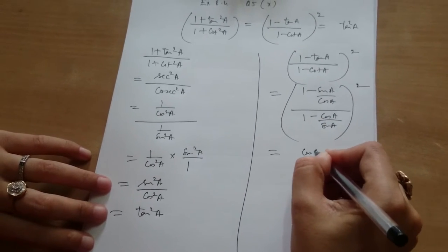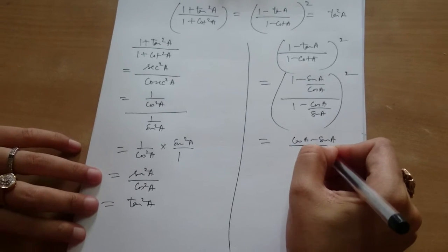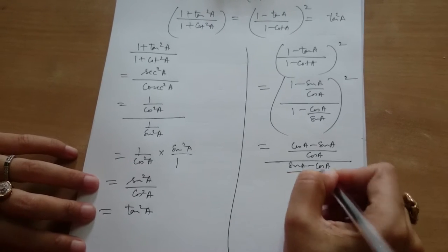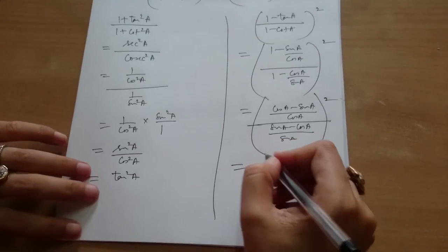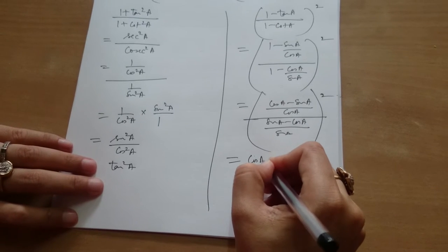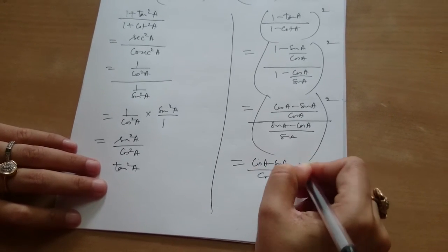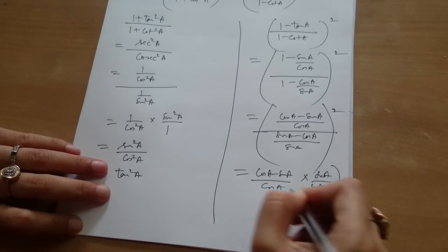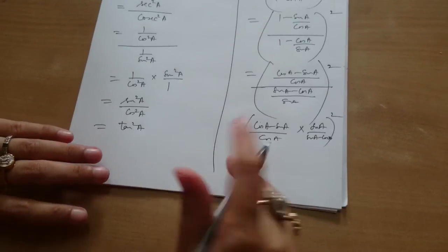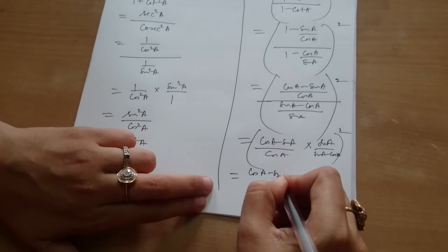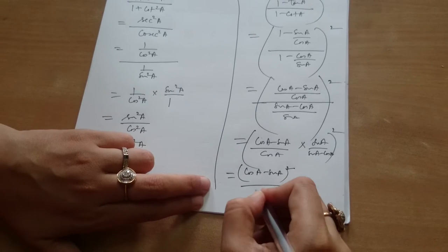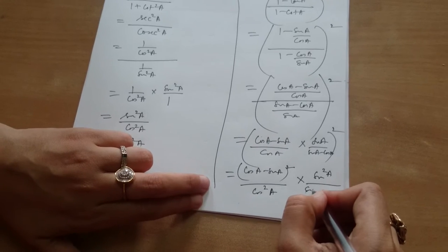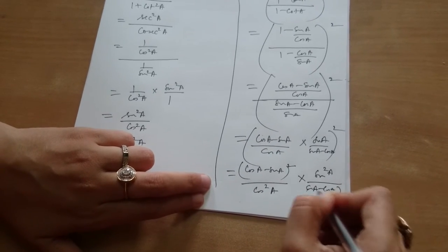Now we will take the LCM. cosA is the LCM, giving (cosA - sinA) / cosA, divided by (sinA - cosA) / sinA, whole square. Which is equal to (cosA - sinA) / cosA times sinA / (sinA - cosA), whole square. Which equals (cosA - sinA)² / cos²A times sin²A / (sinA - cosA)².